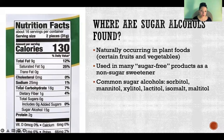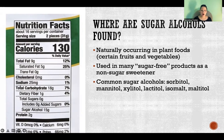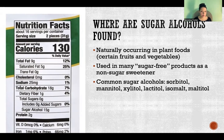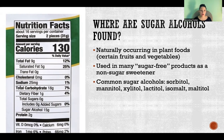So where do we find sugar alcohols? They are naturally occurring in certain fruits and vegetables. And when they're added to processed foods, they're used as sweeteners more often than anything else. We also see them as sweeteners in sugar-free products because they are not technically sugar.